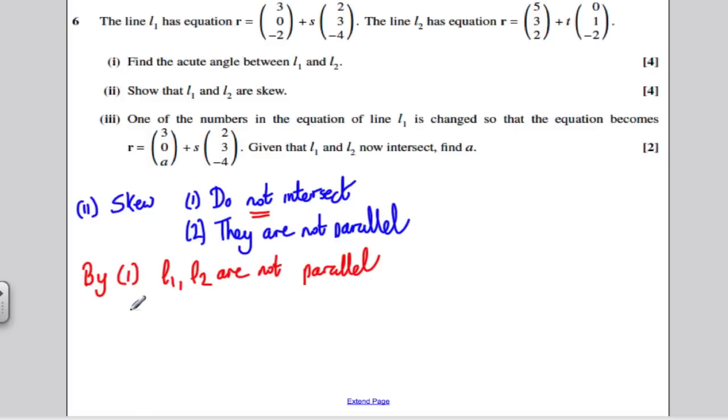So let's rewrite the line L1. I like writing it as a column vector. This would be 3 plus 2S, 0 plus 3S, so I'm just going to write 3S, and minus 2, minus 4S. So minus 2, minus 4S. That is this line here. And I'm going to write L2 as a column vector. 5 plus no T, so that's just 5. So 3 plus 1T, so I'm going to write that as 3 plus T, and 2, minus 2T, as follows.